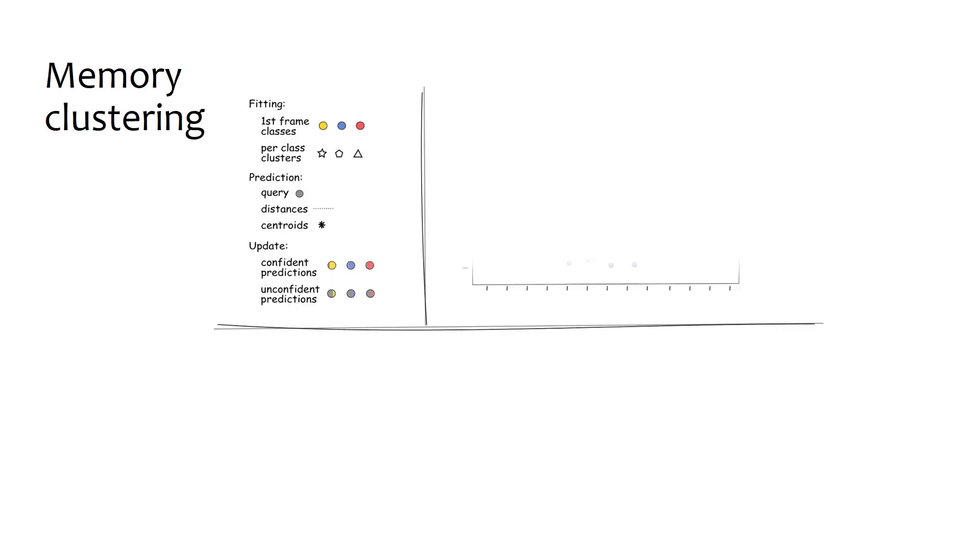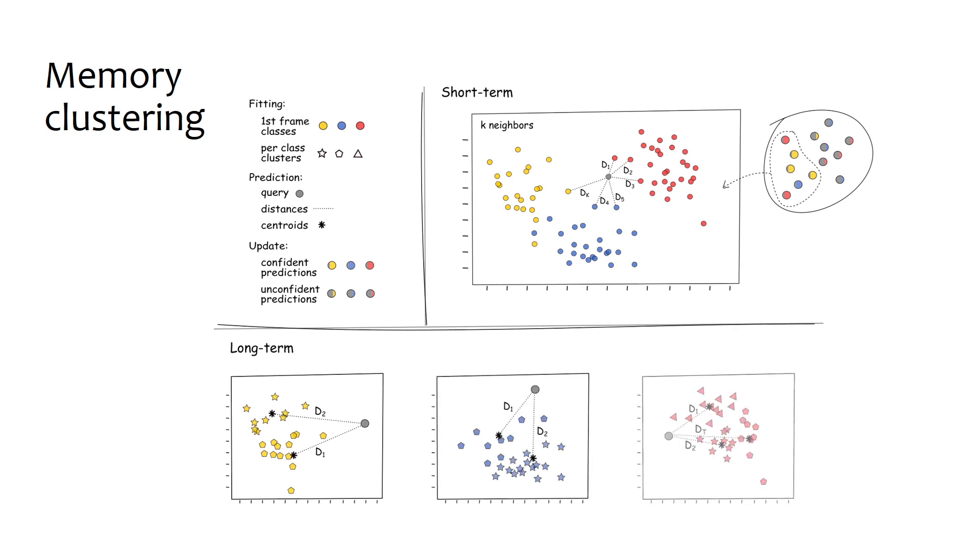Our memory mechanism has two parts. The short-term memory classifies super features according to KNN distance. The long-term memory, on the other hand, computes distance to the centroids of object-specific clusters.